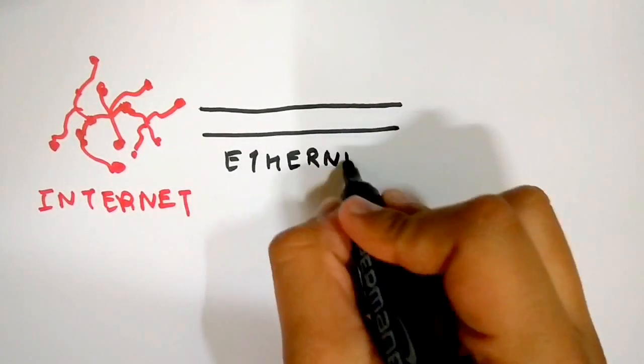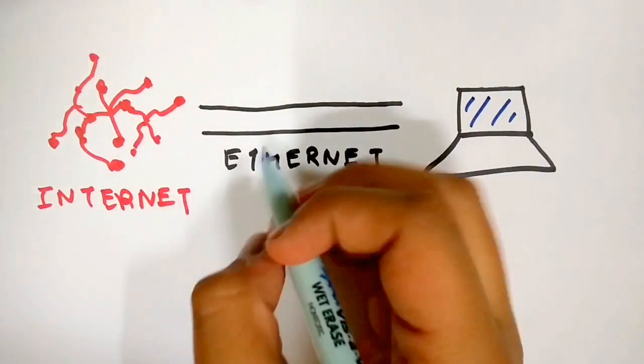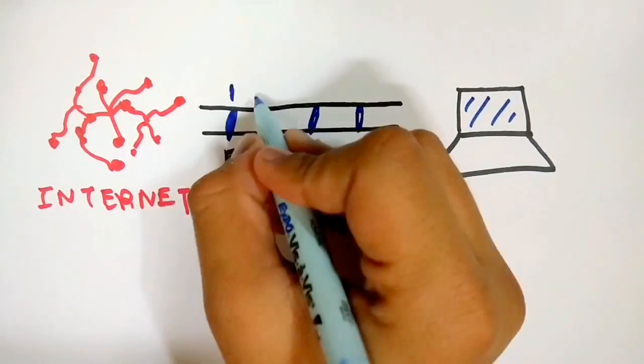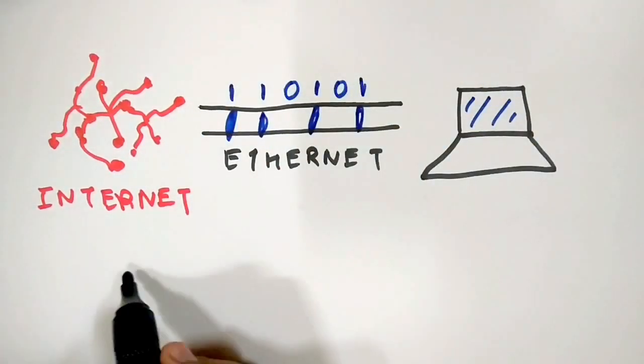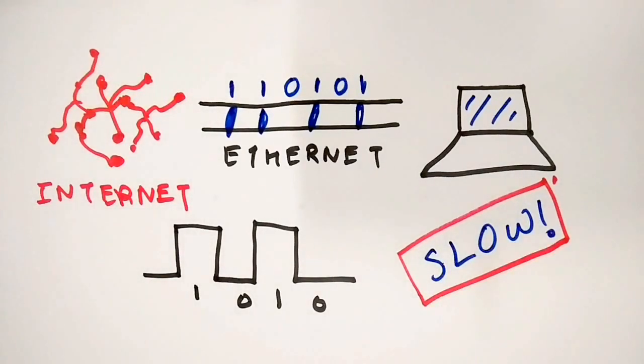Ethernet is a wired connection and uses pulses of electricity to feed binary data from the internet to your computer. A high electric pulse indicated a binary 1 while a low pulse indicated a binary 0. Ethernet was obviously slow due to the resistance offered to the electrons in the wire.